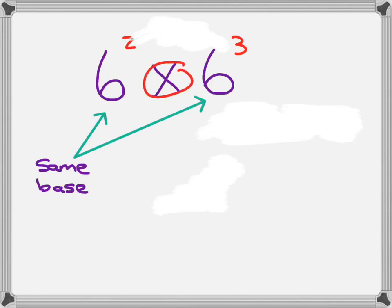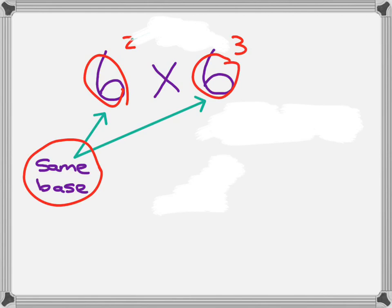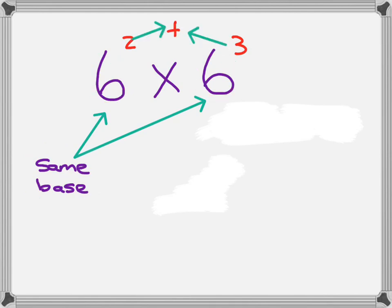Okay, bases that are the same, same bases. So here we have 6 is the same as 6. That means our rule can kick in and that rule is we add the exponents. So 2 plus 3.